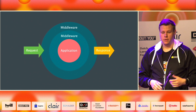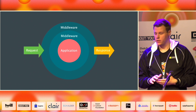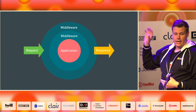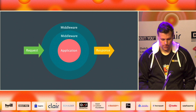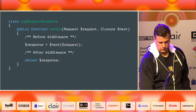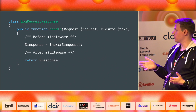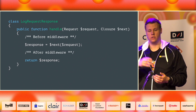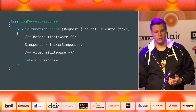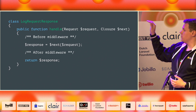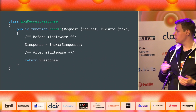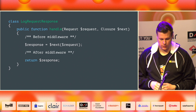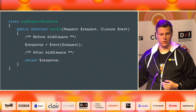On the left side, we call this a 'before middleware', and on the right side, we call it an 'after middleware'. Before is before the request gets into the application, so you can change the request. The after middleware is where you can change the response. If you just return the next request without catching the response, there is no after middleware. That's how you can recognize whether a middleware is before or after.